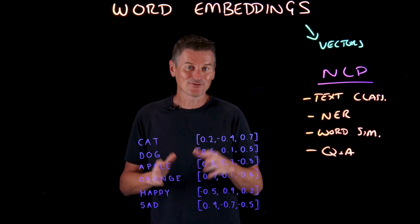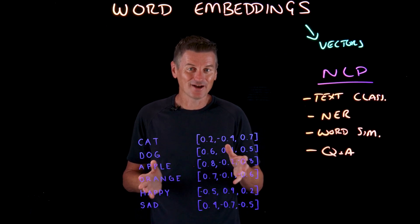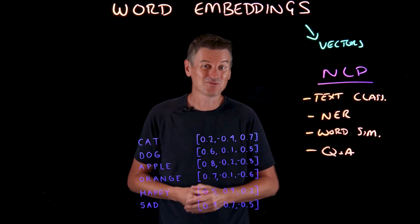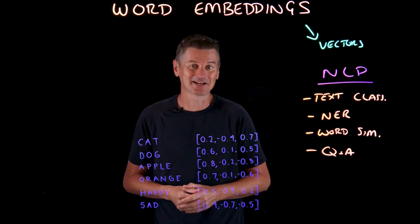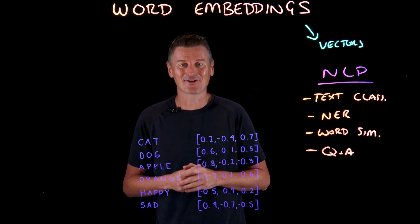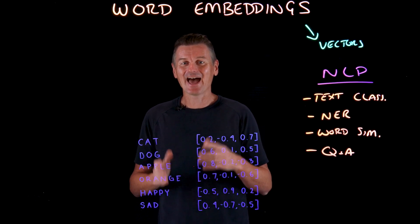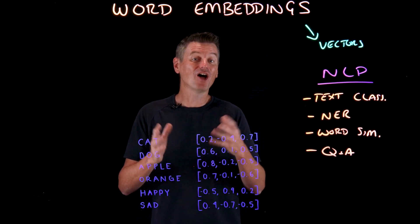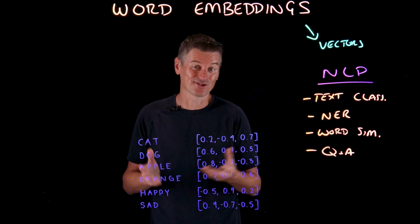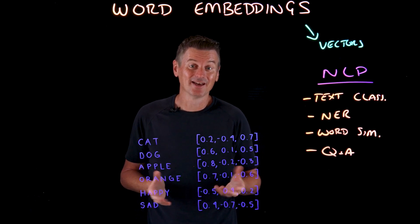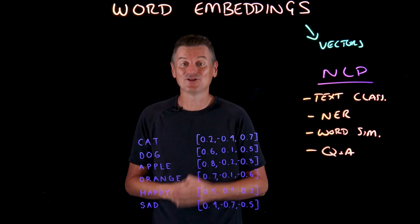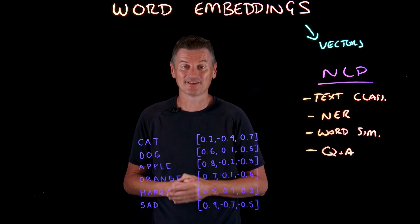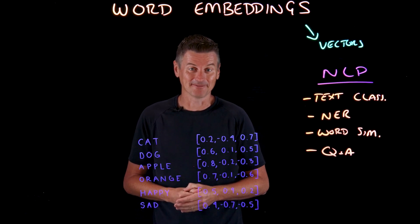Of course, in real life it's not this simple. A corpus of six words isn't going to be too helpful in practice. Actual word embeddings typically have hundreds of dimensions, not just three, to capture more intricate relationships and nuances in meaning.